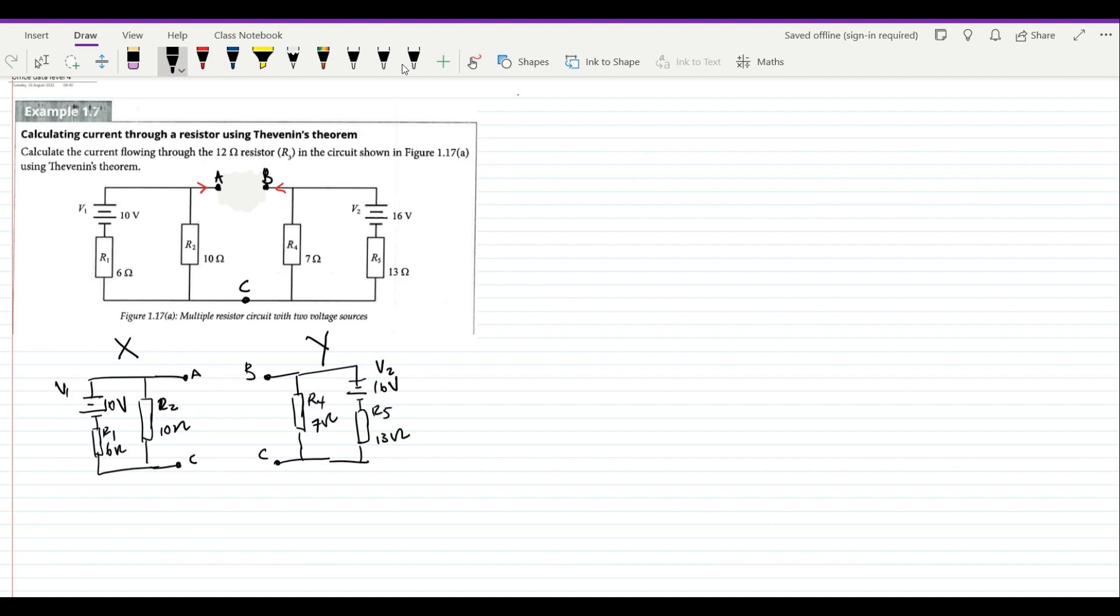Now the next thing that we do: we need to calculate the current in each of these two separate circuits. Let us calculate the current when V1 is supplying the total current, and we're also going to be calculating the total current this side, I2. If V1 is producing current, this leaves 10 and 6 connected in series. That is because there is no other load connected to this side between A and C, therefore current will not flow to that junction. This means that our Rt will be equal to R1 plus R2, which is 6 plus 10, that leaves us with 16 ohms. Same applies here: Rt2 will be R4 plus R5, which is 7 plus 13, giving us 20 ohms.